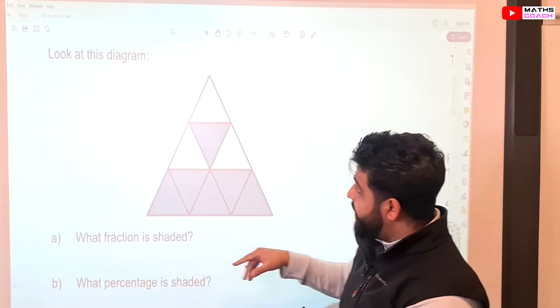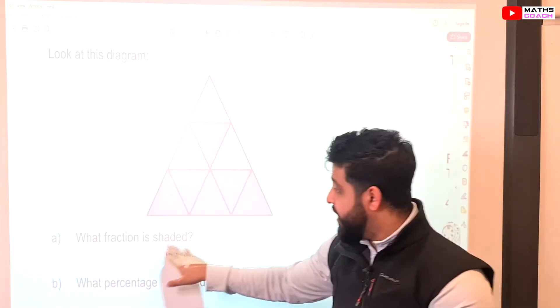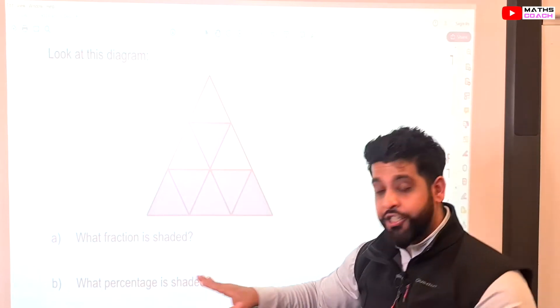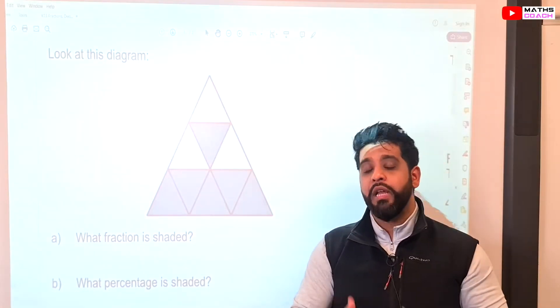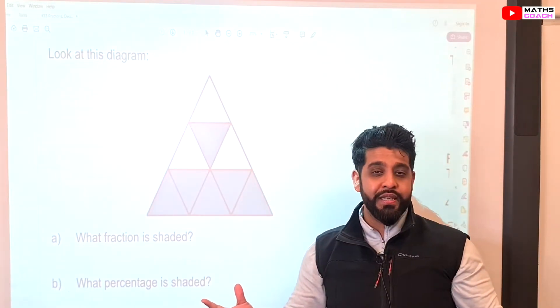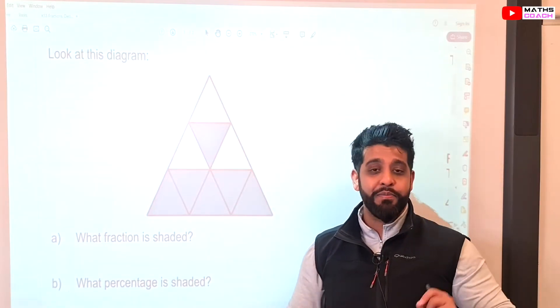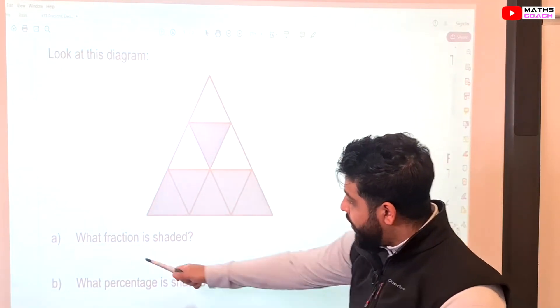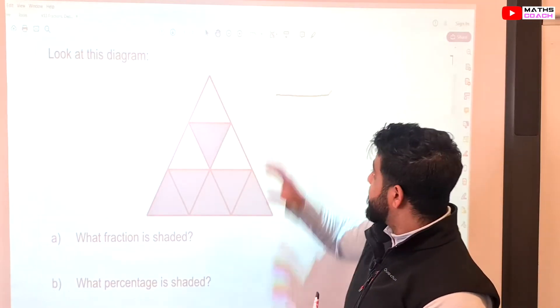So, let's have a look at this first question here. It says, look at this diagram and part A, what fraction is shaded and part B, what percentage is shaded. Now, percentages can always be obtained by multiplying by 100. So, if you've got a fraction, you can multiply it by 100 to find its percentage. If you've got a decimal, you can multiply it by 100 to find its percentage. So, let's go back to this question, what fraction is shaded? Right, so this is asking us for a fraction, something out of something.